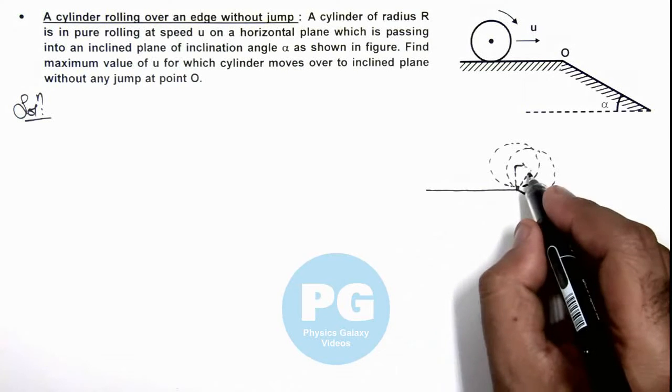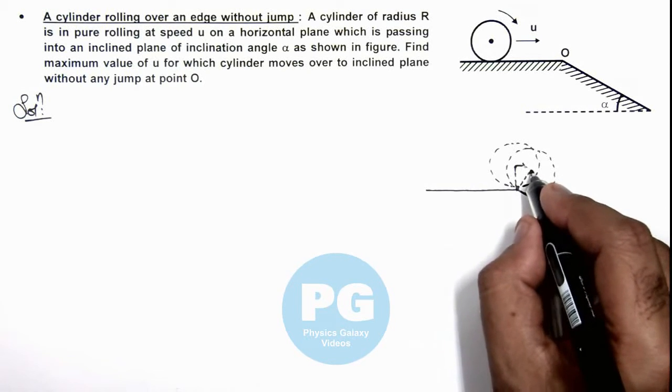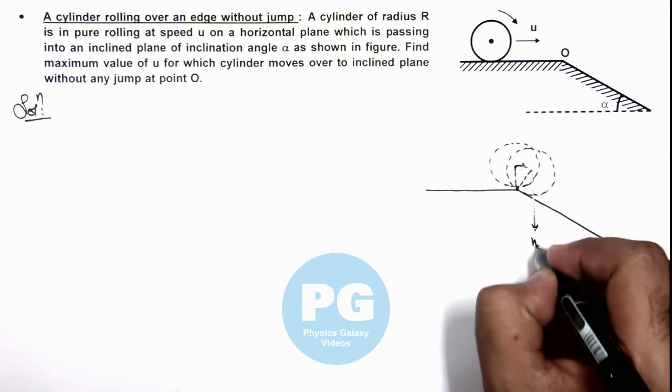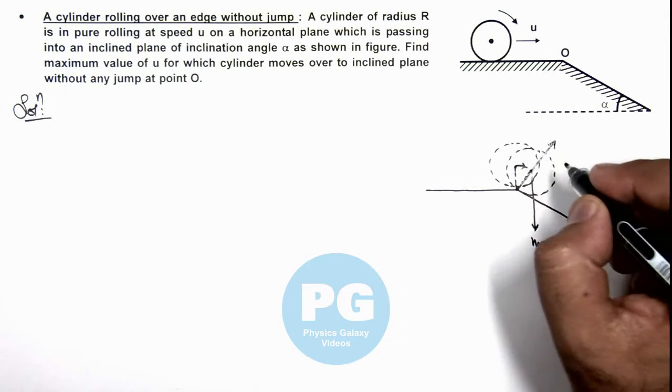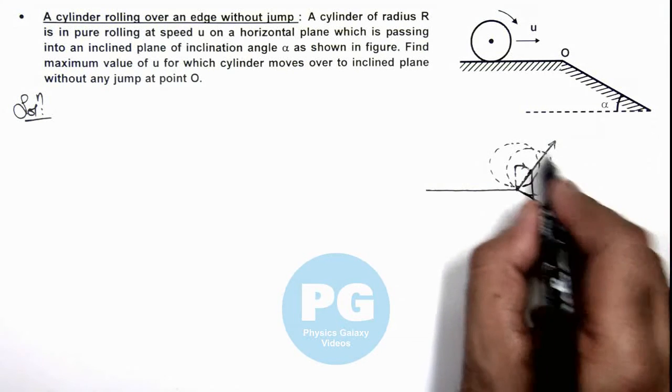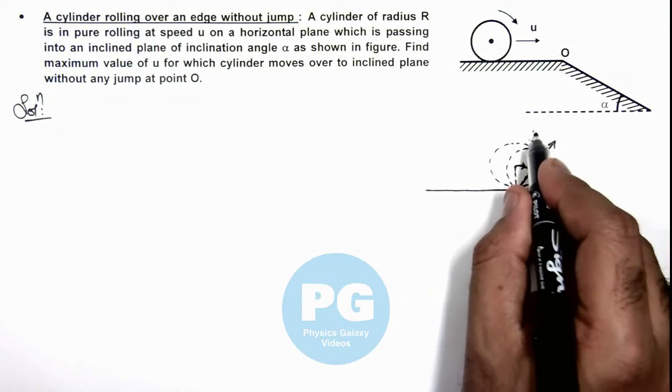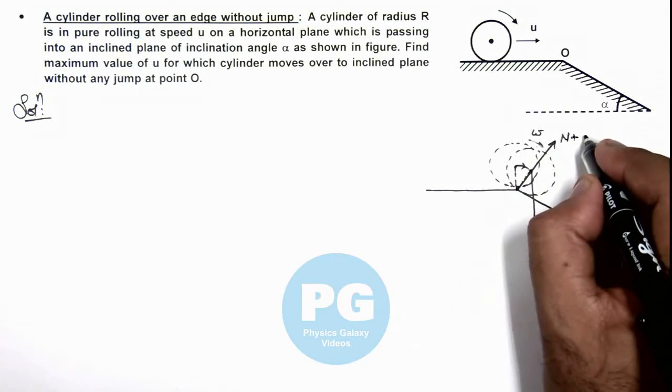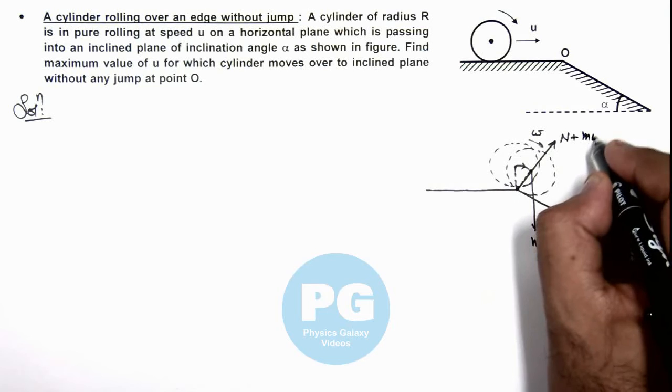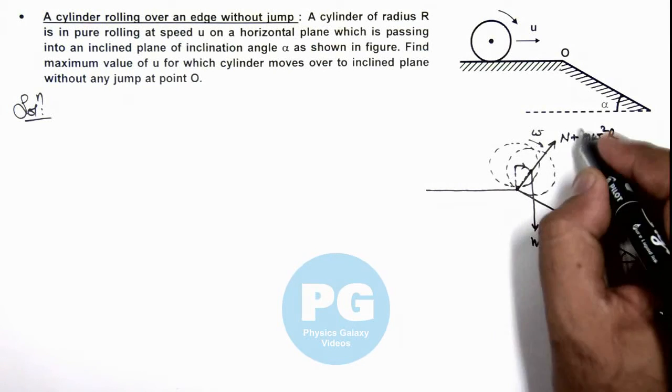And at this point, the weight of the cylinder is acting in downward direction, and a normal reaction will act on cylinder in this direction. And if the cylinder is having an angular speed omega, then we can say it is also experiencing a centrifugal force m omega squared R in outward direction.